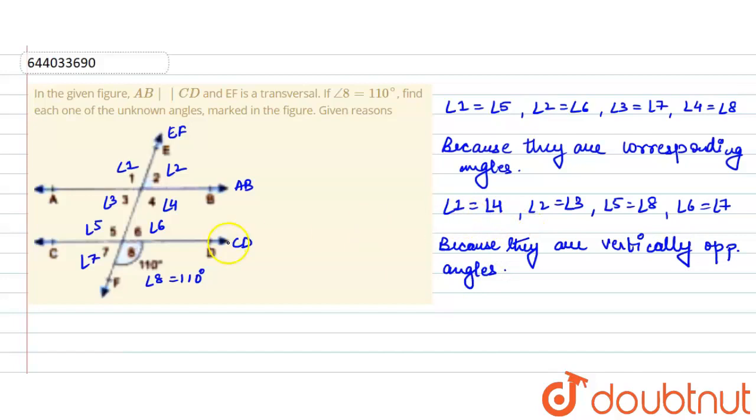So from here you can see that I will write them down in a different form. What all angles are equal to angle 1? Angle 1 is equal to angle 5, and this angle 5 is equal to angle 8, and angle 8 is equal to angle 4. Now if you see here, they all are equal to angle 8, and angle 8 is equal to 110. So therefore all these angles will be equal to 110.